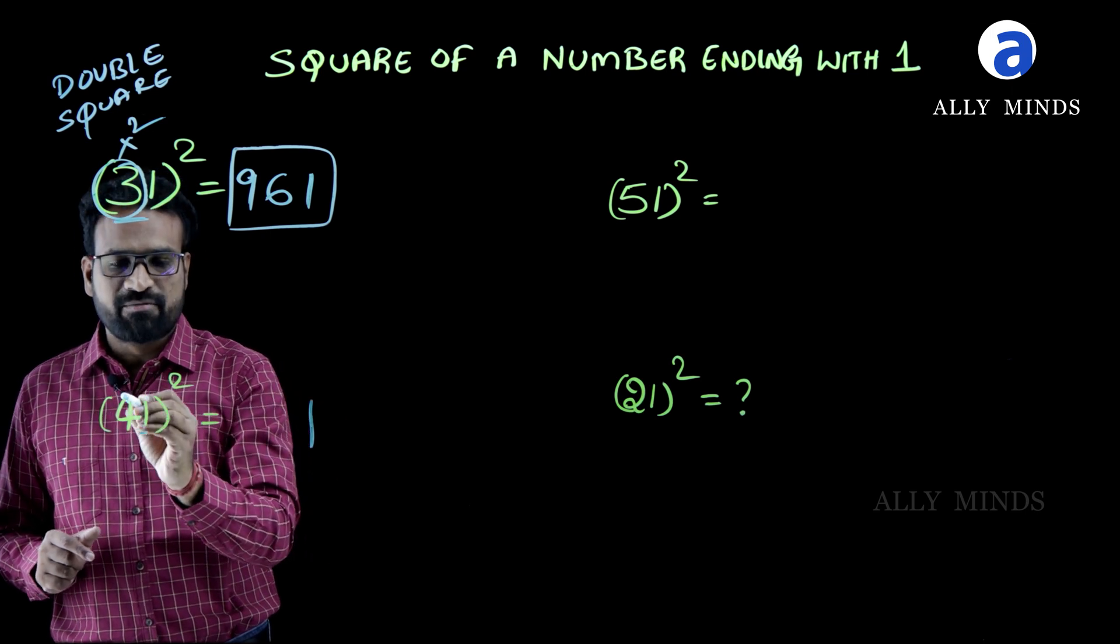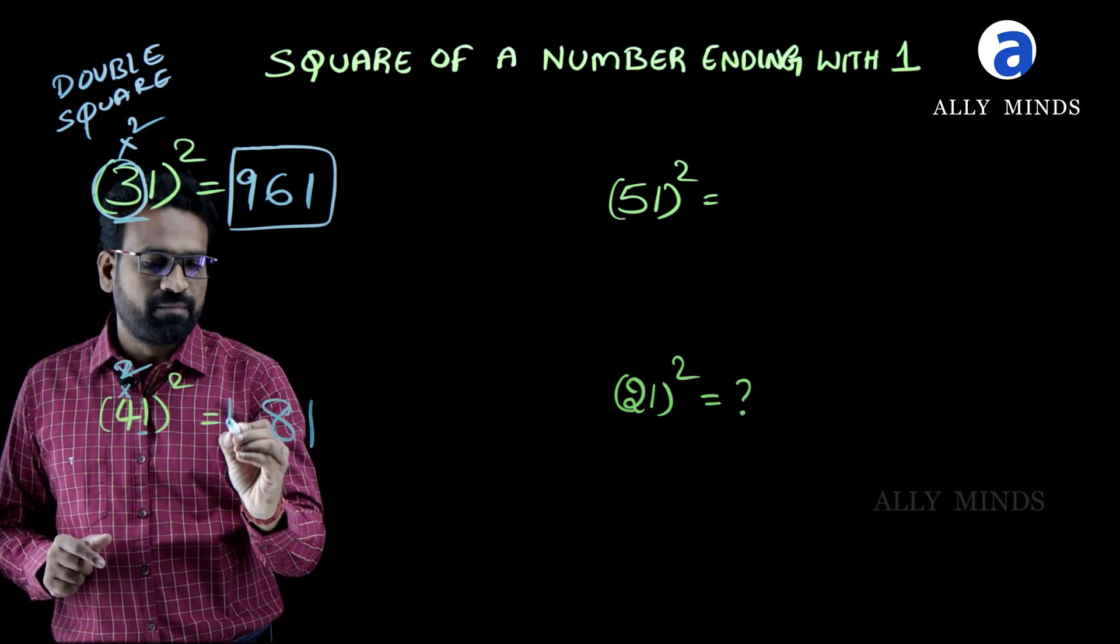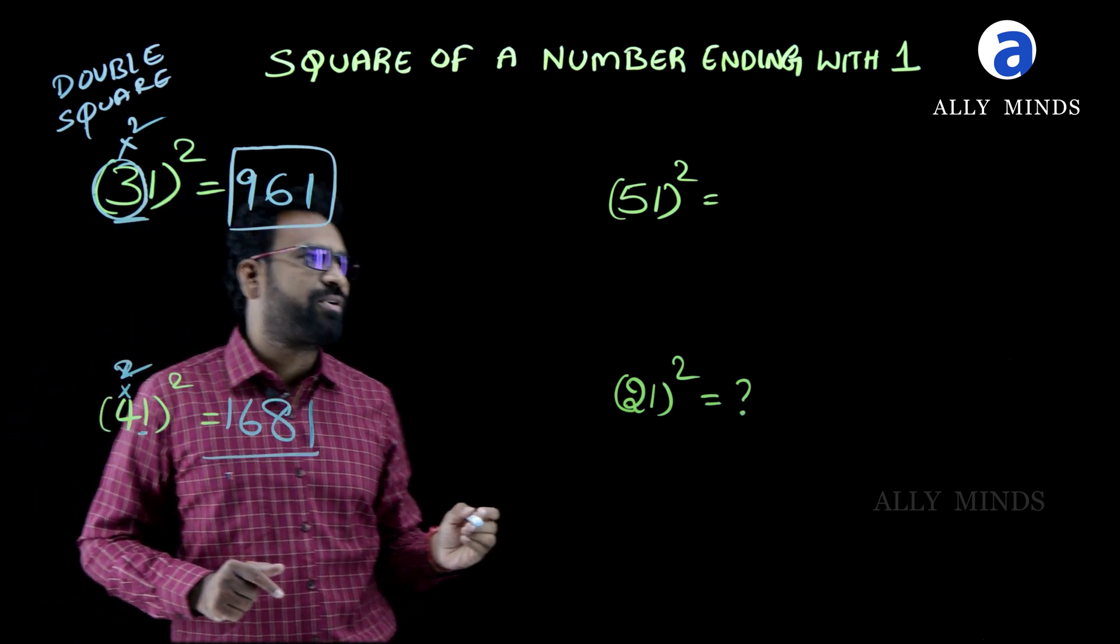See here, first write that one as it is. First double it, it will become 8 and square it, it will become 16. So, 1681 is the final answer.